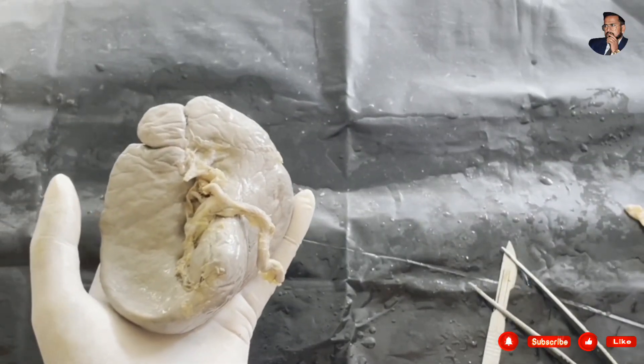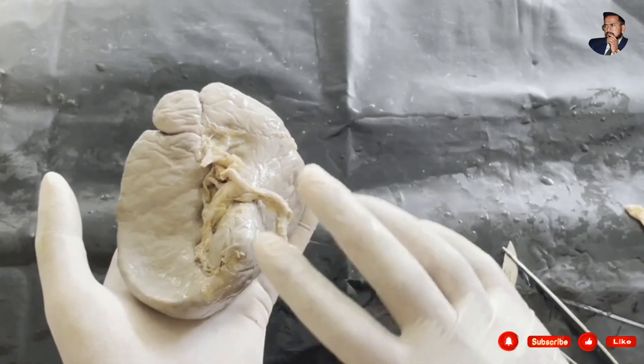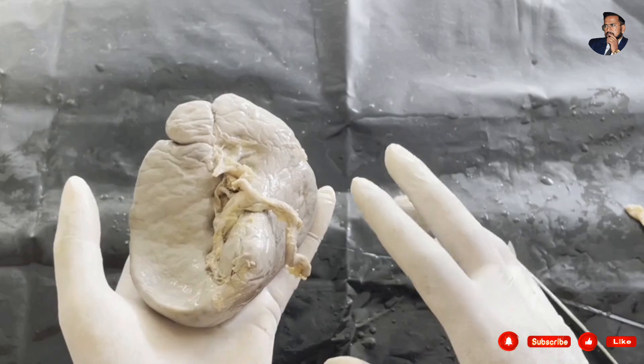A very good morning to everyone. Today we have a demo on the largest lymphatic organ that is known as spleen. It is present in left hypochondrium.